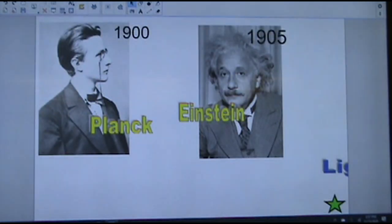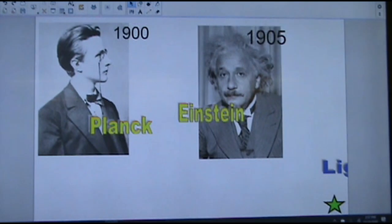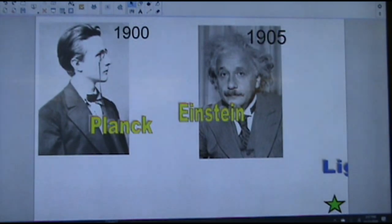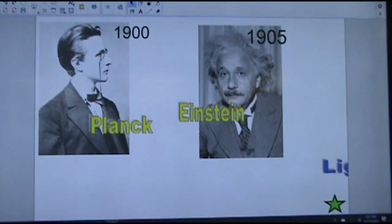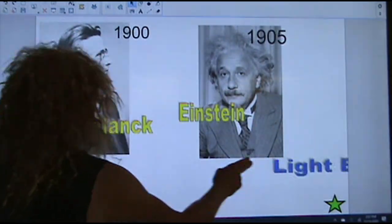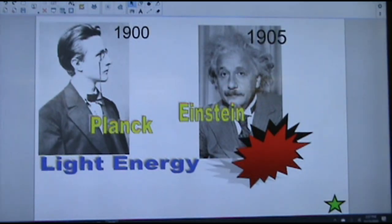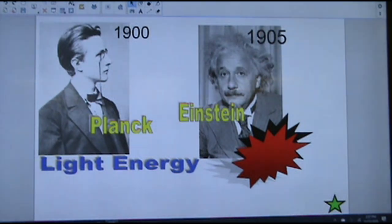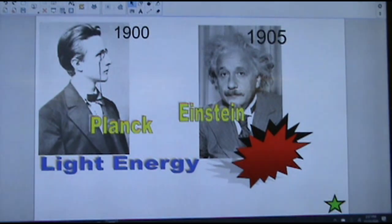We've already talked a little bit about Max Planck and the work that he did with light. Albert Einstein was doing similar kinds of things. And from the work of Max Planck and Albert Einstein, we were able to start thinking of the photon as a particle of light.